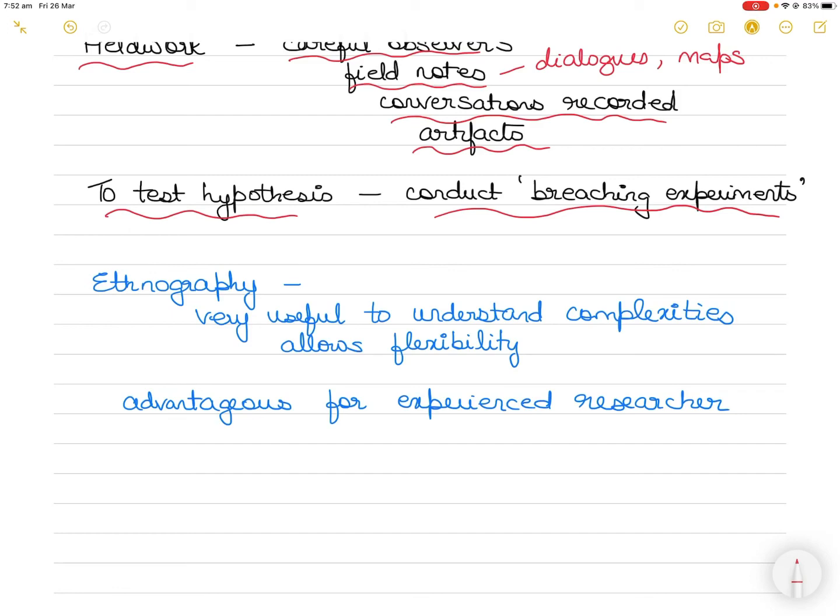An ethnographic study is especially useful for gaining an understanding of the complexities of a particular social group. It allows flexibility in the methods used to obtain information, which can either be an advantage to an experienced researcher who knows what to look for. However, it can be a big disadvantage to a novice or new researcher who may be overwhelmed and distracted by unimportant details.